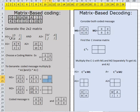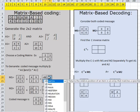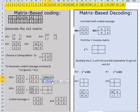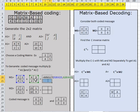Next, I am going to do multiplication: C with M1 — A1 means our first coded message segment. Using the inbuilt function: first matrix, comma, second matrix, close the bracket, and put Ctrl+Shift+Enter.